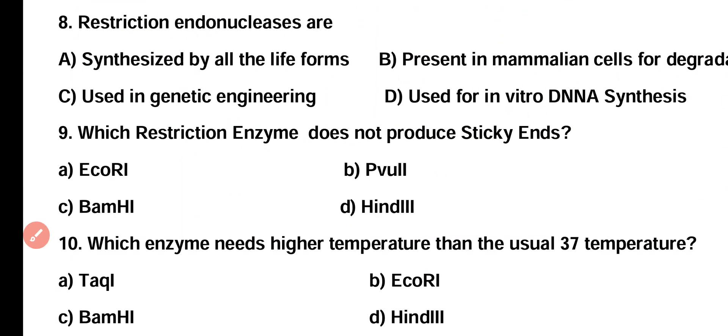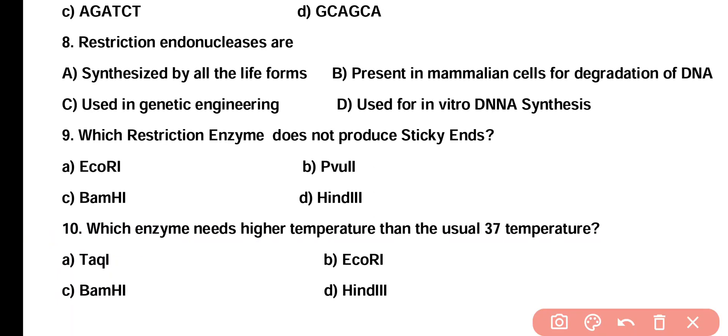Question 8. Restriction endonucleases are: Option A: Synthesized by all living forms present in mammalian cells for degradation of DNA. Option C: Used in genetic engineering. Option D: Used for in-vitro DNA synthesis. The correct answer is Option C. Restriction endonucleases are widely used in genetic engineering and they are synthesized by bacteria as a defensive mechanism against viruses.